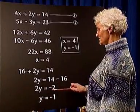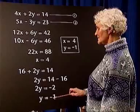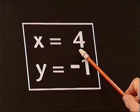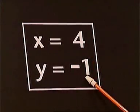2y equals minus 2, so y equals minus 1. Therefore our solution is x equals 4, y equals minus 1.